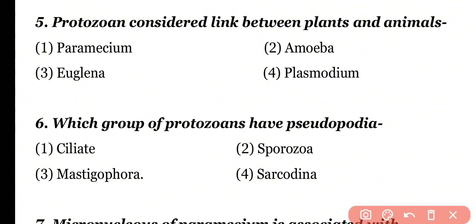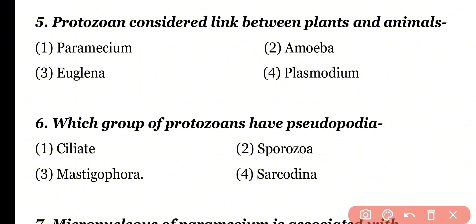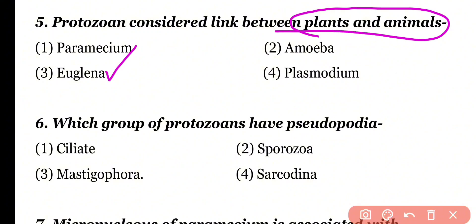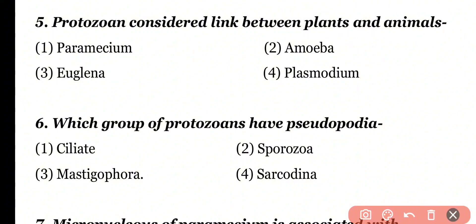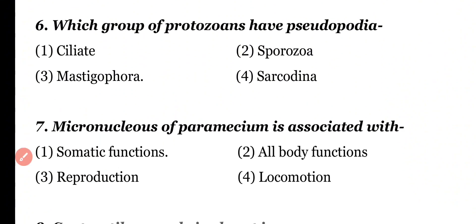Question number 5: Which protozoan is considered as a link between plants and animals? Paramecium, Amoeba, Euglena, or Plasmodium? Correct answer is option 3. Euglena is a connecting link between plants and animals.